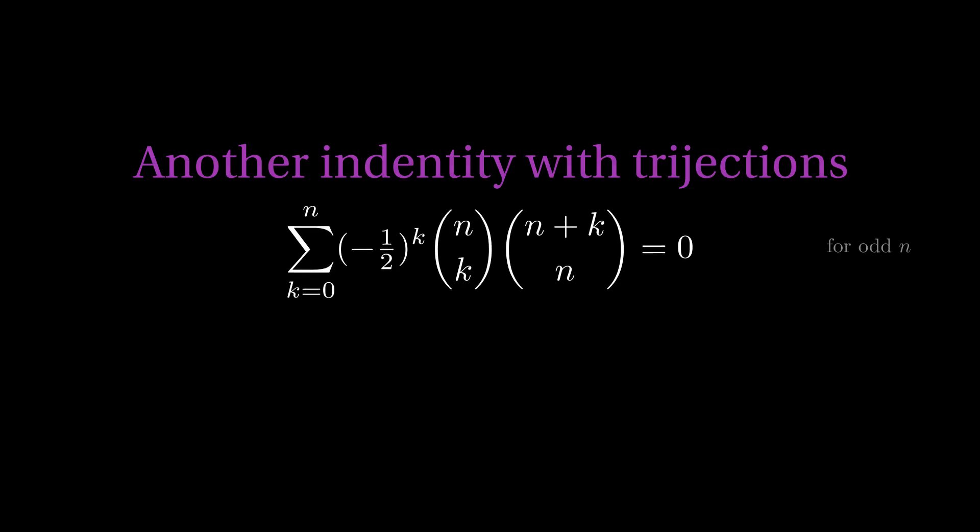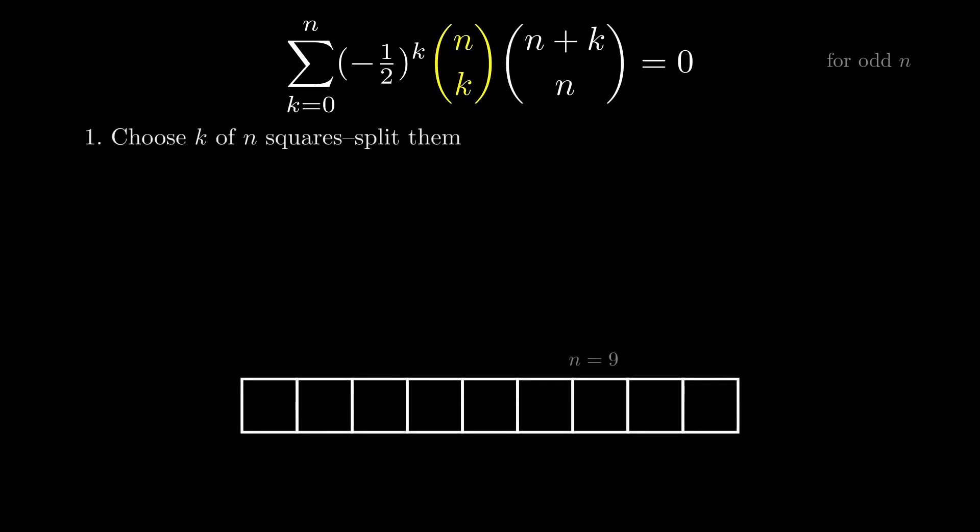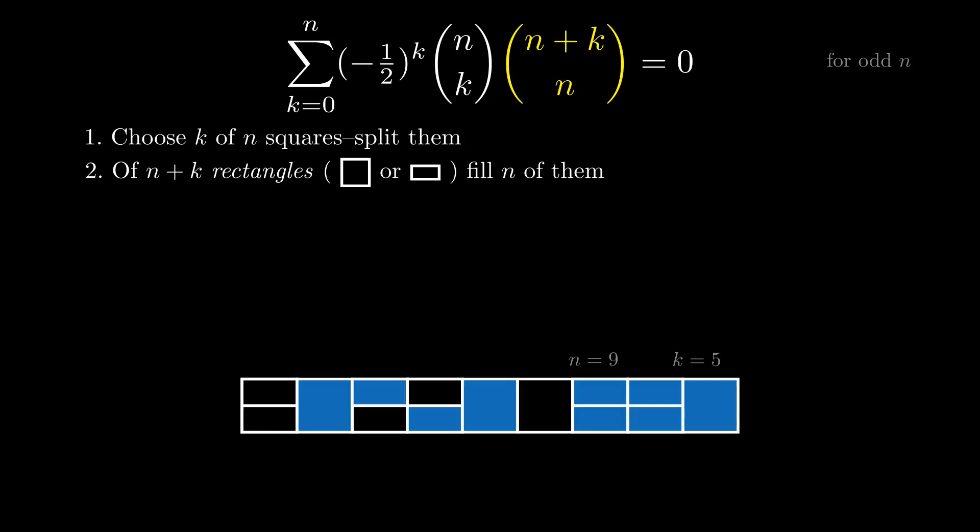Okay, no more stalling. Let's see what that left-hand side counts. We'll do this part slowly, because it's a pretty complicated sum. Start by choosing k squares from an n-long strip. We need an n plus k choose n next, so imagine that these squares are split in half, so we now have n plus k total rectangles. Of these n plus k rectangles, fill n of them, the same number of full squares we started with.